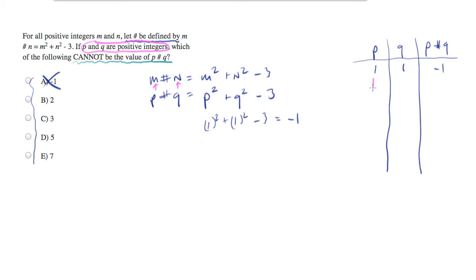So let's try plugging in one for p and two for q. We'll get one squared plus two squared minus three equals five minus three is two. So two is not the answer. All right, we're doing pretty good. We can see since we're eliminating some of these that we're on the right track. So we are finding numbers in the right range.